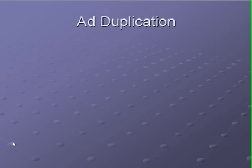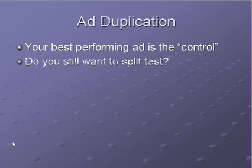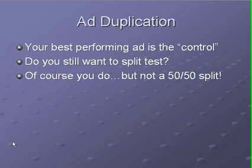The first ninja technique I want to teach you about is called ad duplication. Before we get to that, I want to make sure everyone understands that when I refer to the control, I'm talking about your best performing ad in an ad group. So you've got an ad that's performing extremely well — maybe it's more profitable than anything you've ever run before. Do you still want to split test? Of course you do, but you might not want to do a 50-50 split when you have a really good ad that's working. You might not want to give your ad impressions to a test ad.